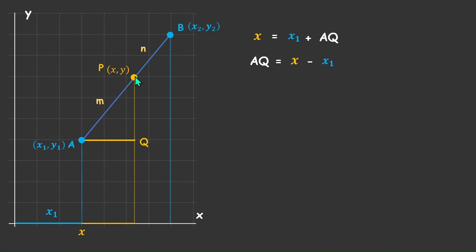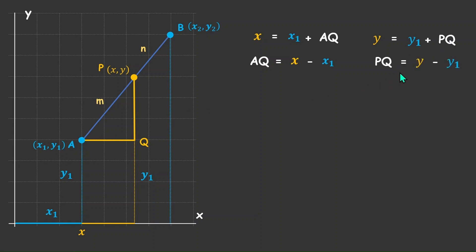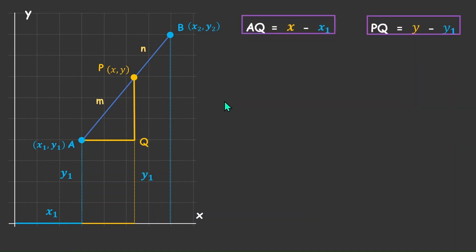Now let's understand what the length PQ can be. The y-coordinate of A, which is y1, is known, so this length is also y1. And if this length PQ is known, then the entire y-coordinate of P is PQ plus y1. So we can write y = y1 + PQ. These are two pointers we'll keep in mind.